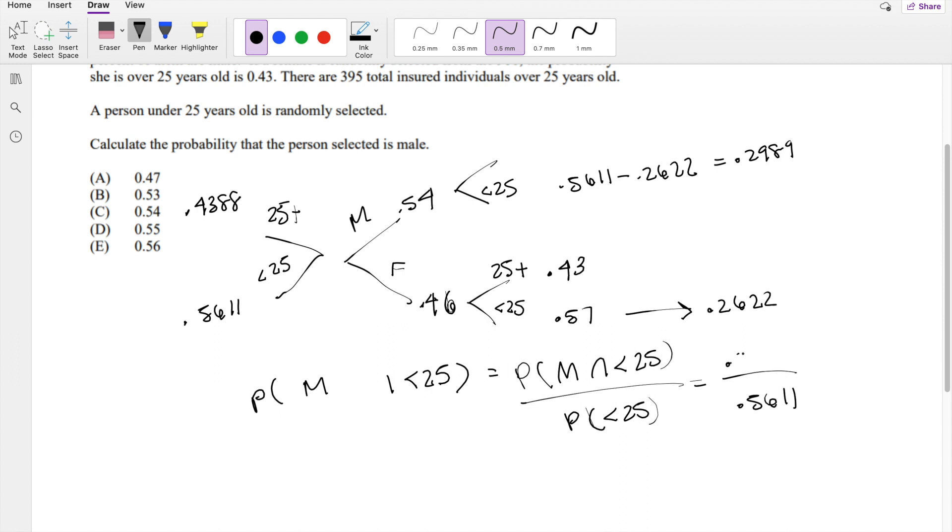So that's 0.2989 divided by 0.5611, which is approximately equal to 0.5327. Our answer is B.